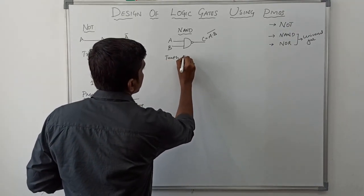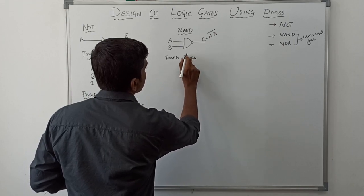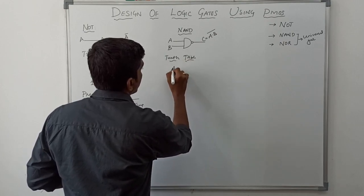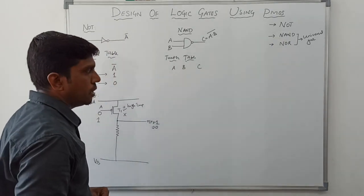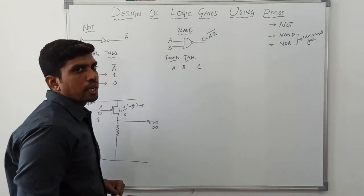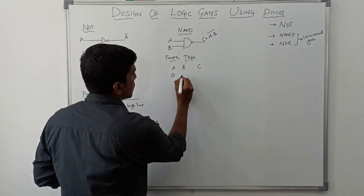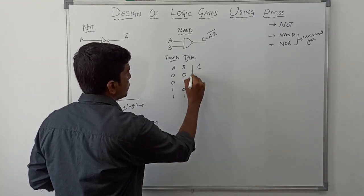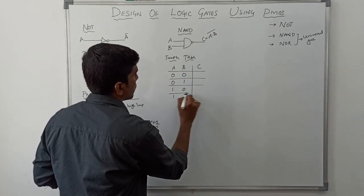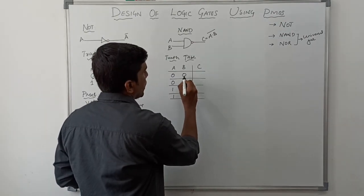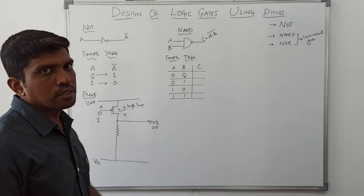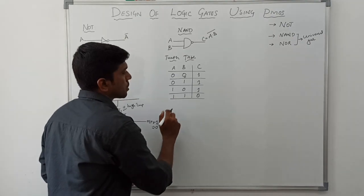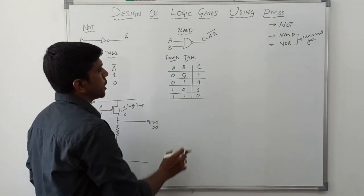Now I am writing the truth table. Inputs are A and B, and output is C. With two variables there are four combinations of input: 00, 01, 10, 11. The output of the NAND gate: if any one of the input values is 0, the output is 1 — so outputs are 1, 1, 1. When both inputs are high, the output is 0. That is the truth table of NAND gate.